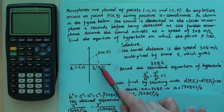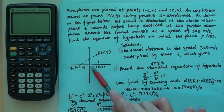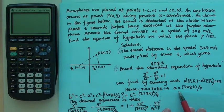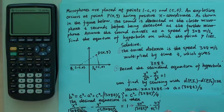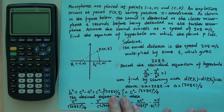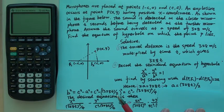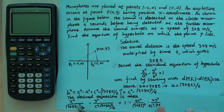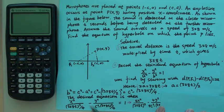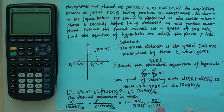We can now write the equation. In this case, the vertices and foci are on the x-axis, so a² goes below the x variable. The equation is x² over a² minus y² over b² equals 1, where a² is (328T/2)² and b² is c² minus (328T)²/4. Now the rest is to make this a little more recognizable.